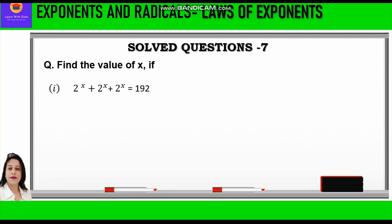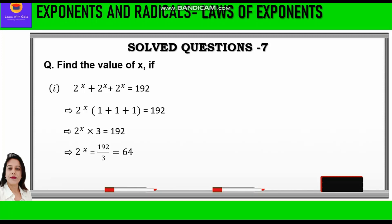Question 1 is: 2 raised to power x plus 2 raised to power x plus 2 raised to power x is equal to 192. We can take 2 raised to power x common and write in bracket 1 plus 1 plus 1 is equal to 192. Further, 2 raised to power x into 3 is equal to 192.